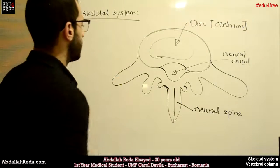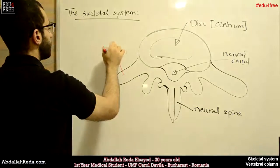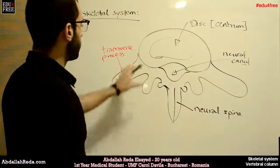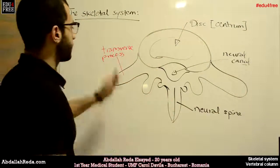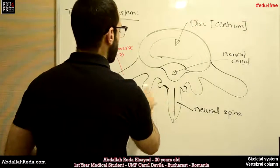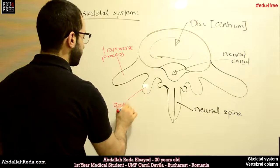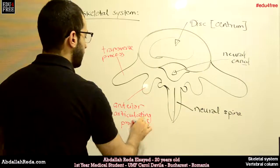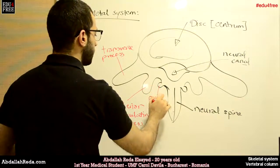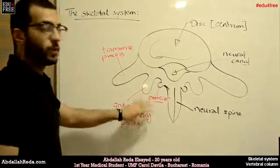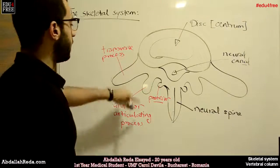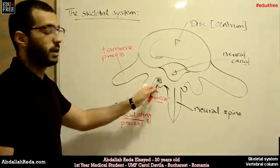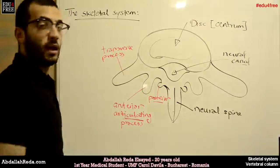We also have a process that protrudes to the side, called the transverse process. Additionally, there are two articulating processes: the anterior articulating process and the posterior articulating process. These two processes help in the articulation and movement between each two vertebrae — one is found anteriorly and the other posteriorly.